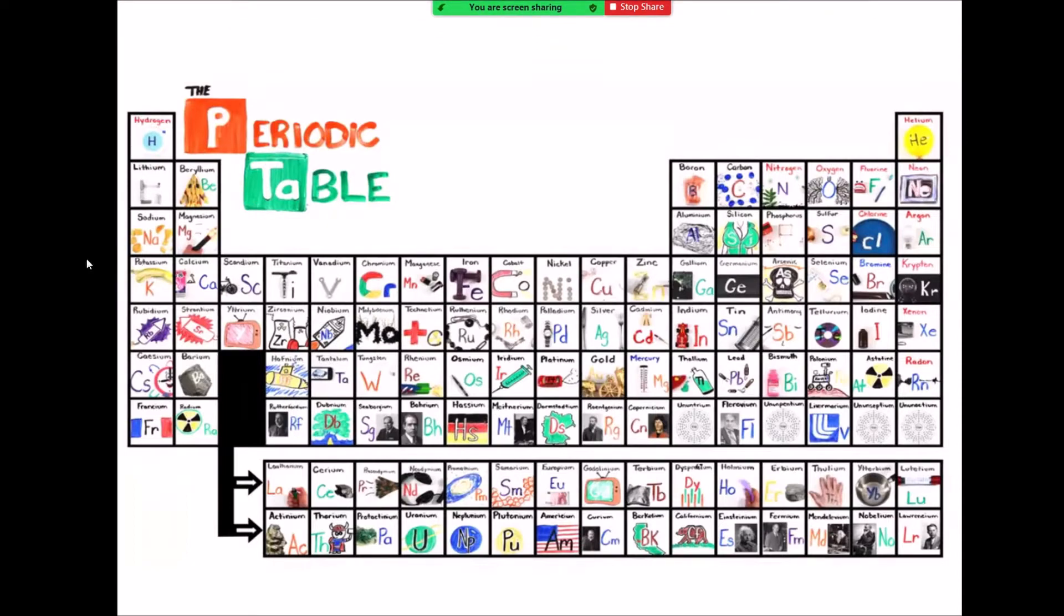As you can see from where these are positioned, they have different properties. Anything on the last column here, we call these the noble gases or inert gases. Their trait is they don't react, so they're really safe for helium using in balloons, neon with light, argon with light. They're really stable. We have in group one, really reactive, probably one of the most reactive elements of the periodic table.